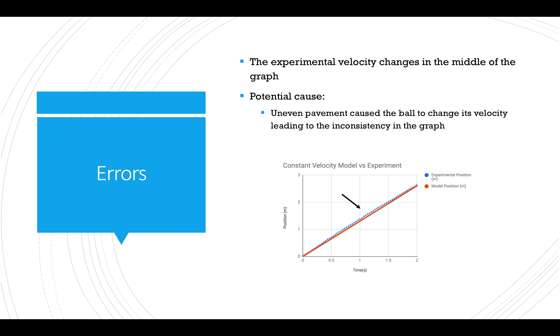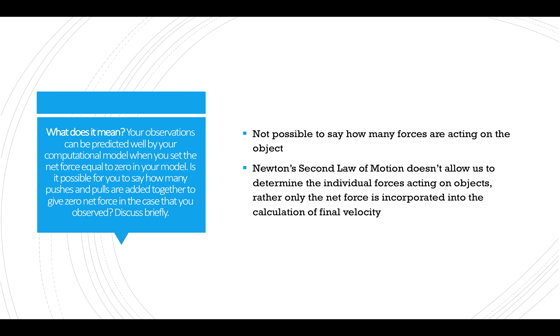To answer the second question it's not possible to say how many forces are acting on the object. Newton's second law of motion doesn't account for the number of individual forces acting on an object. It only accounts for the total net force on the object in order to calculate the final velocity.